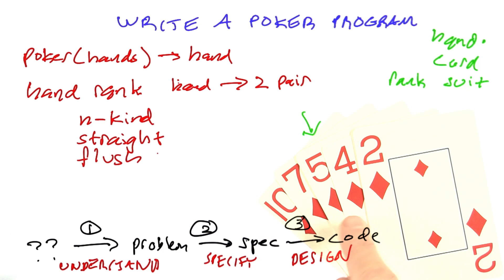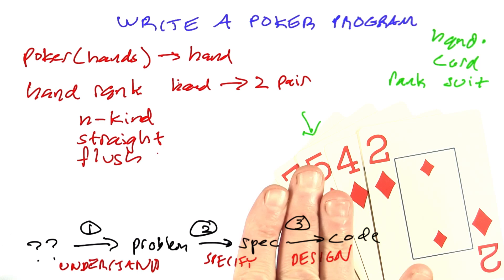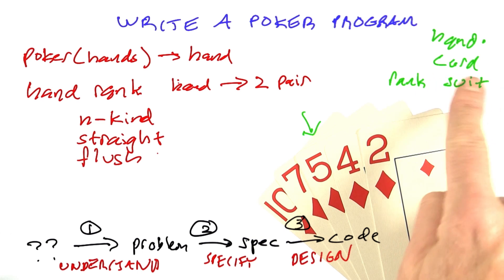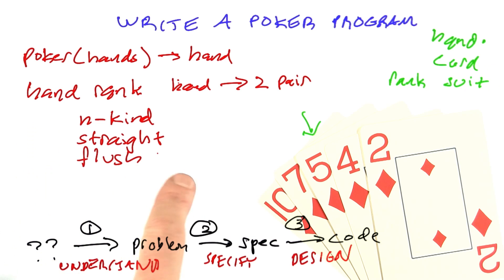There are a few more details about the ranking. You can look it up on the links. You can see the Wikipedia article on poker hands, but now I think we're ready. We know about the types of data we have to deal with, hands, cards, ranks, and suits, and we know about the operations or functions on them.